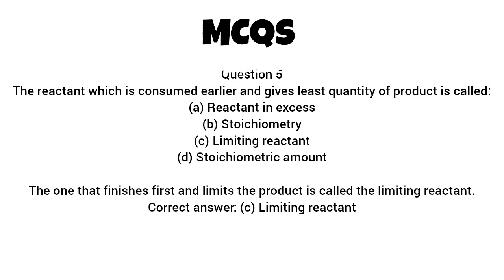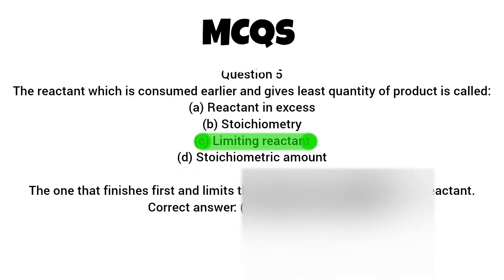Question 5. The reactant which is consumed earlier and gives least quantity of product is called A. Reactant in excess. B. Stoichiometry. C. Limiting reactant. D. Stoichiometric amount. The one that finishes first and limits the product is called the limiting reactant. Correct answer C. Limiting reactant.